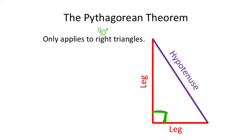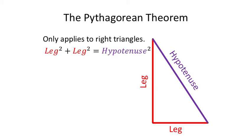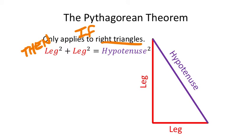Just as a little factoid, the hypotenuse is the longest side of a right triangle. Now, the Pythagorean theorem is more of a conditional statement: if you have a right triangle, then you have this relationship with the legs and the hypotenuse.